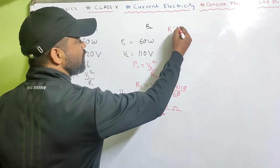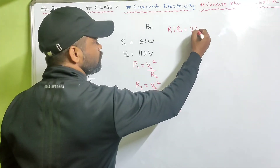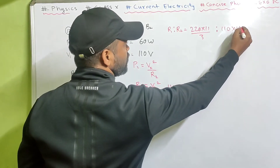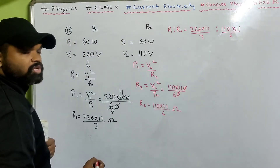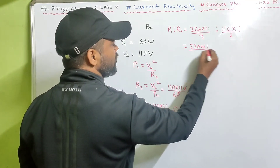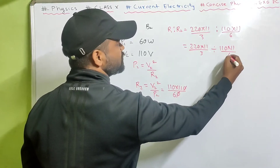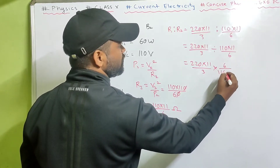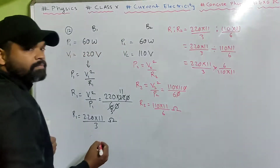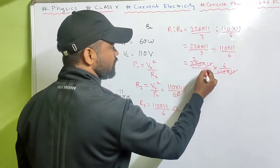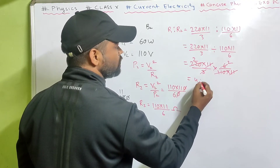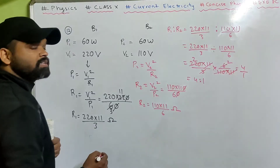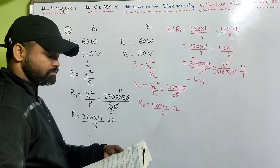R1 to R2 equals (220 into 11 by 3) divided by (110 into 11 by 6). Simplifying: 220 by 110 is 2, and 6 by 3 is 2, giving 2 times 2 equals 4. So the ratio R1 to R2 is 4 to 1. That's the correct answer.